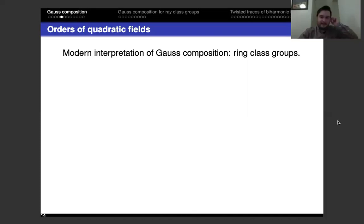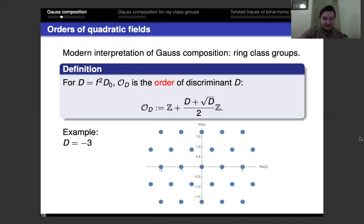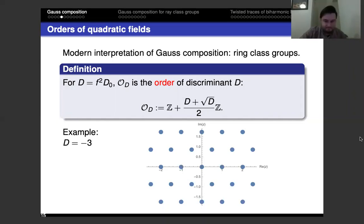Now we'll give a more modern interpretation of this composition law — it's the group law on the ring class group. Everything in this talk is about quadratic fields. The quadratic order of discriminant d is defined to be the lattice ℤ + ℤ·(d + √d)/2. You can check this is a ring. In the case d = -3, you get the hexagonal lattice — the Eisenstein integers.